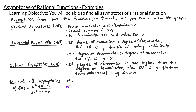Let's start by finding the vertical asymptotes for this rational function. We need to factor both the numerator and denominator. For the numerator, we need two numbers that multiply to negative 2 and add up to positive 1 — those would be positive 2 and negative 1. So our numerator factors as x plus 2 times x minus 1.